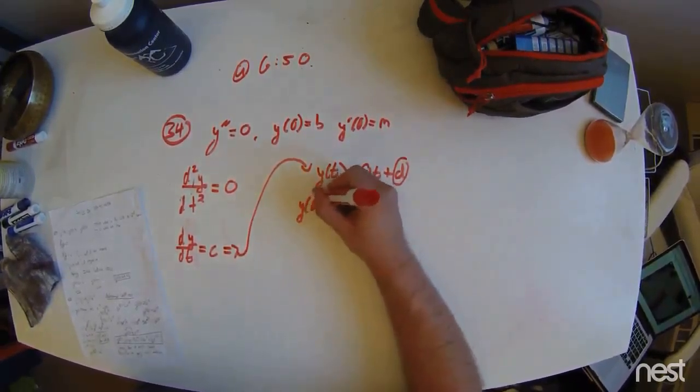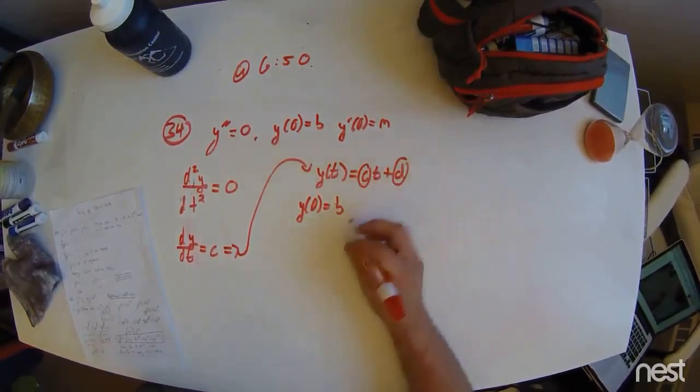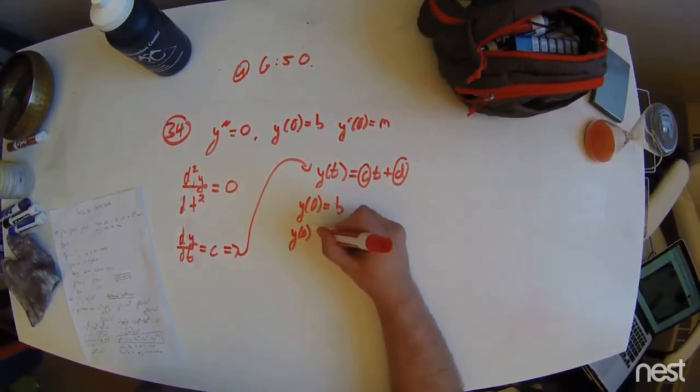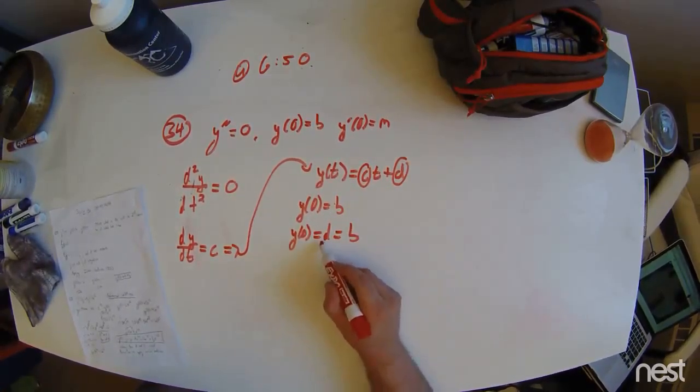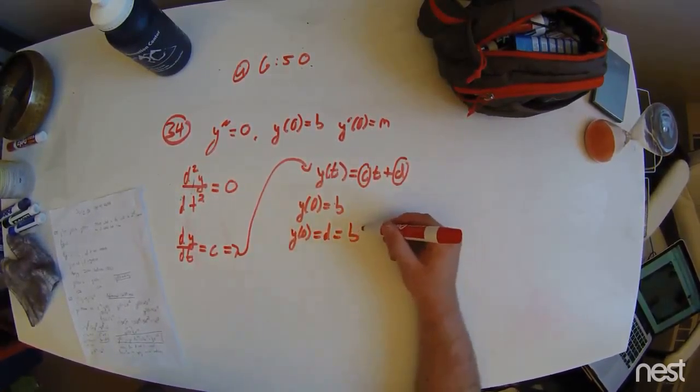y of zero equals b. So, y of zero equals d equals b, d being the constant of integration, b being the initial condition.